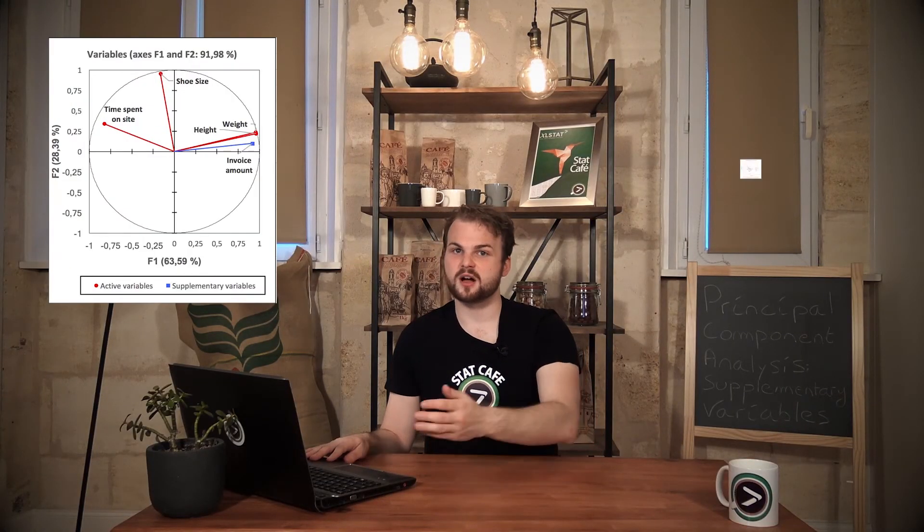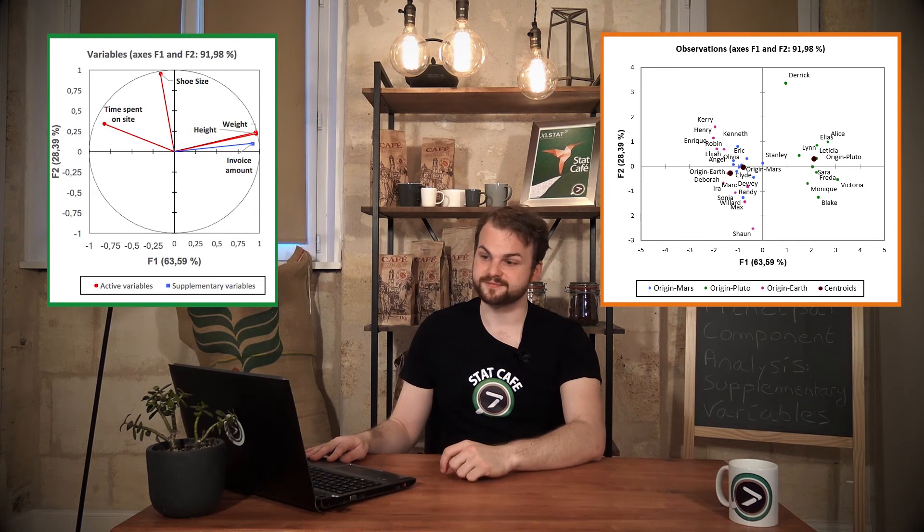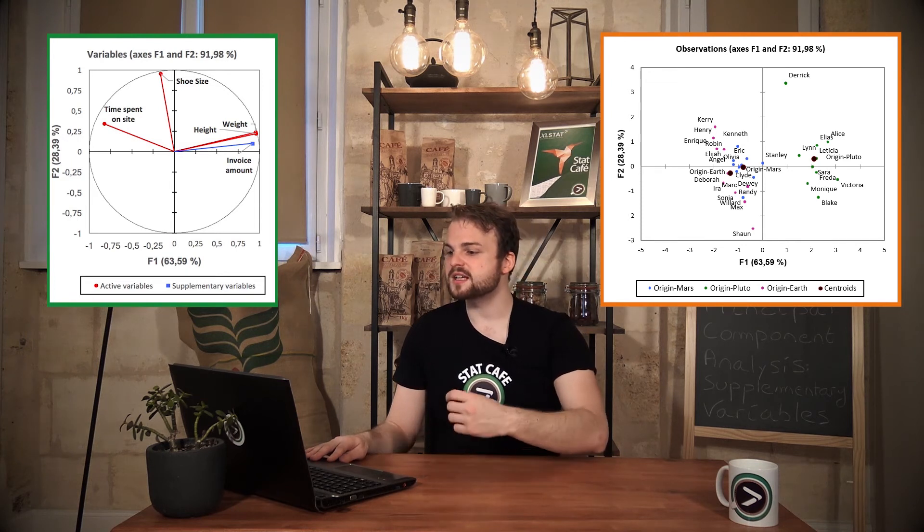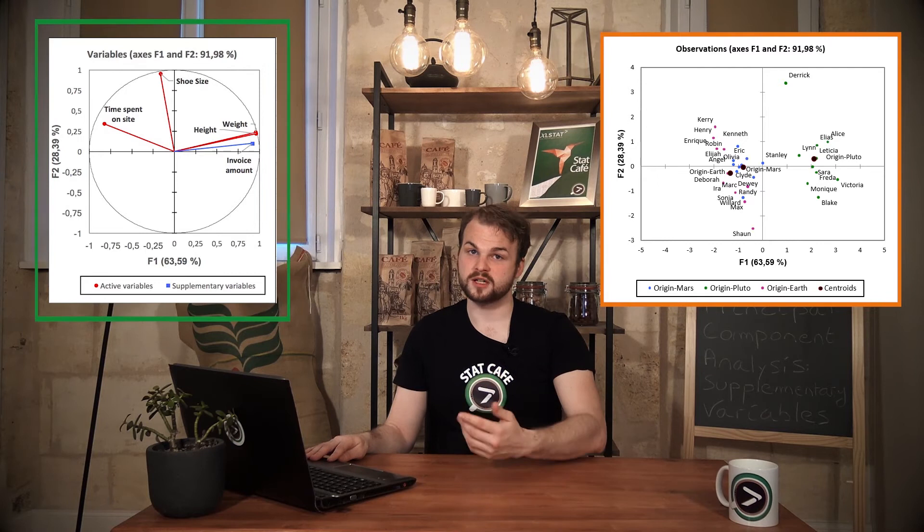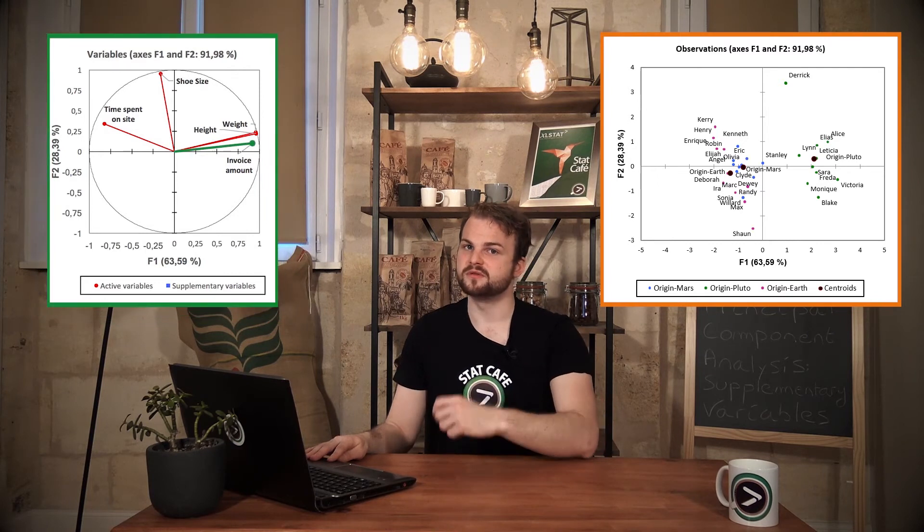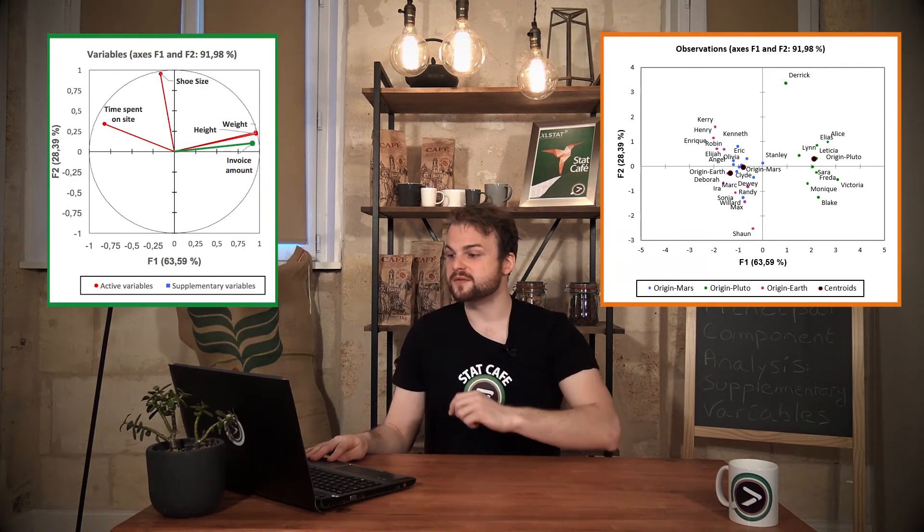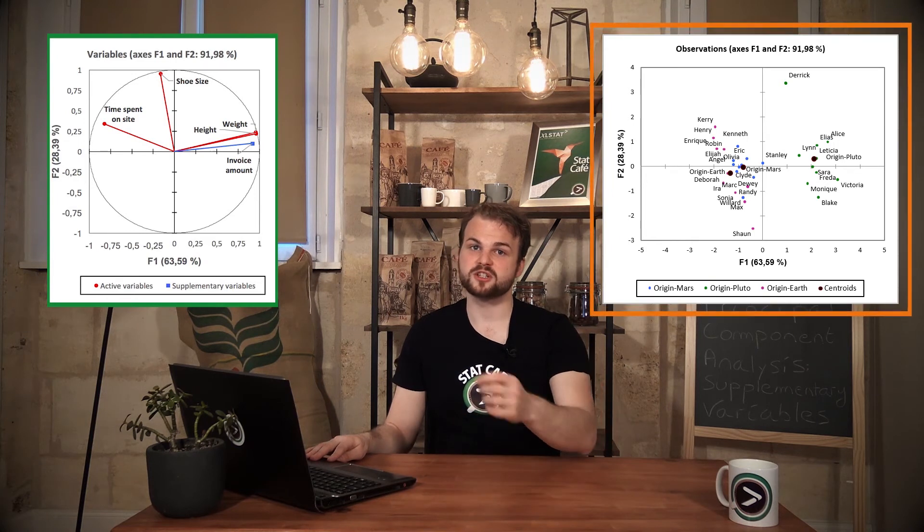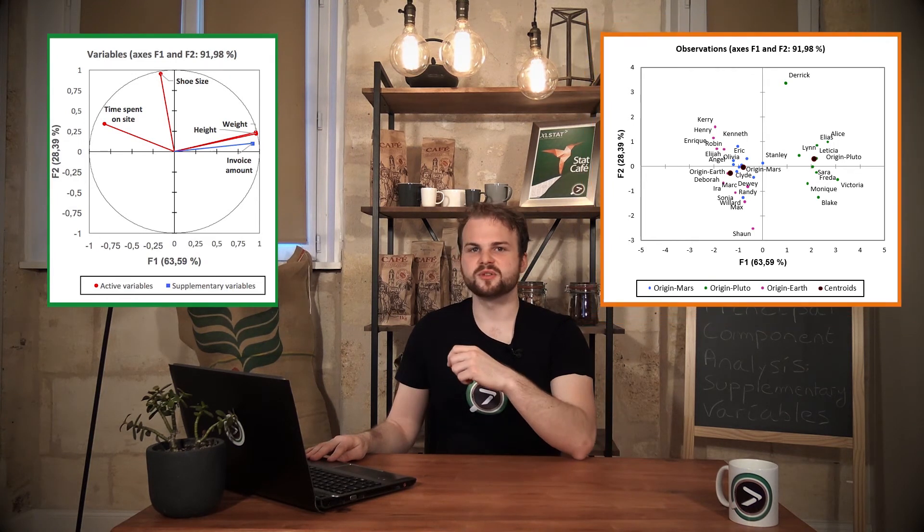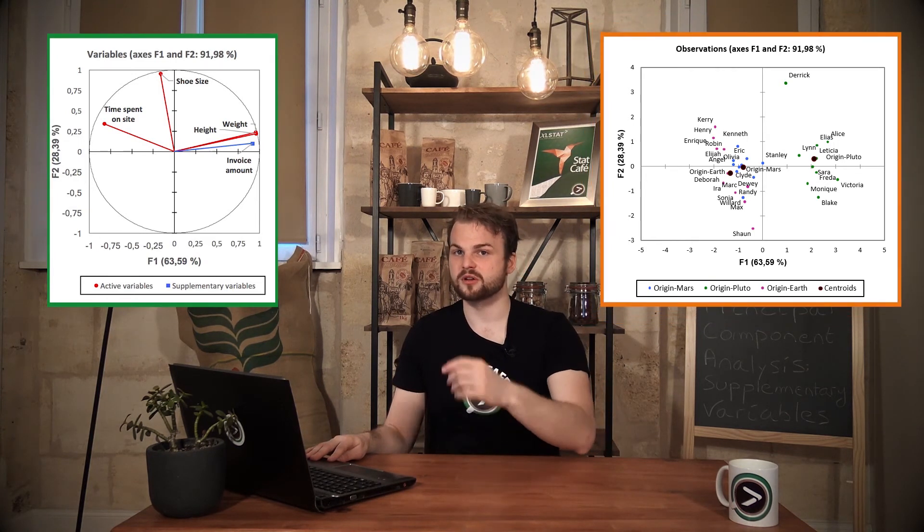We will interpret the obtained correlation circle and observations chart simultaneously. Here, quantitative supplementary variables are represented in the correlation circle in the form of blue vectors. Qualitative variables are visible in the observations chart. Each customer is colored according to his or her origin.